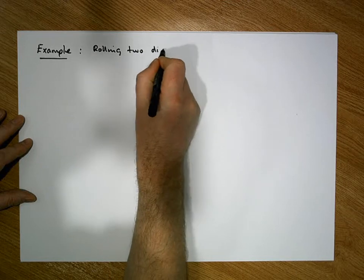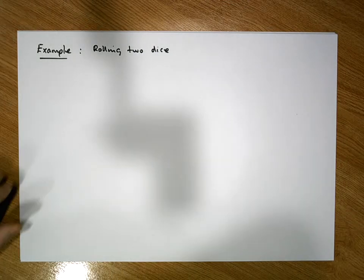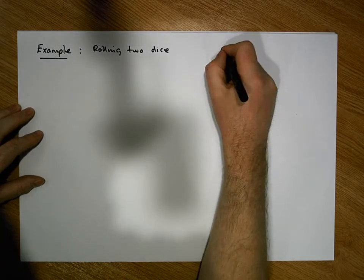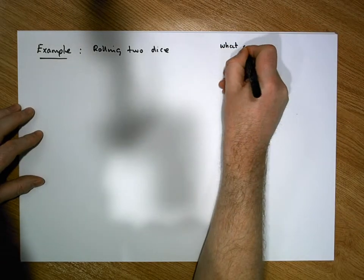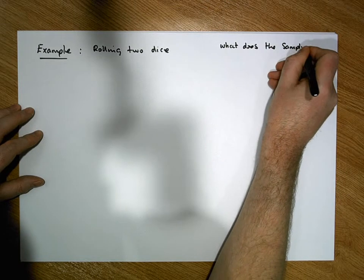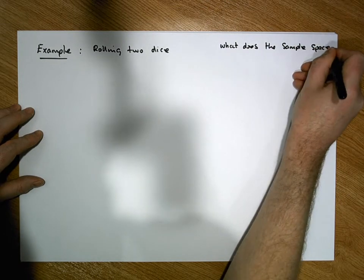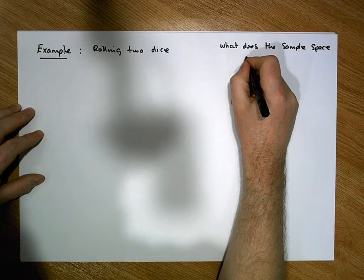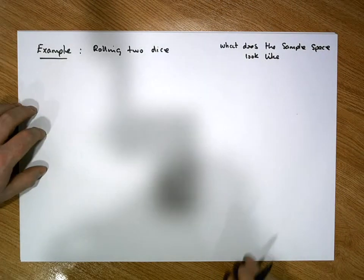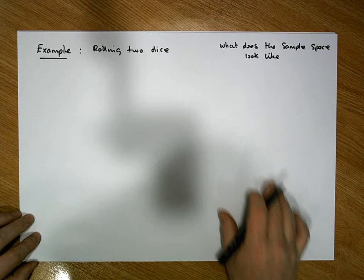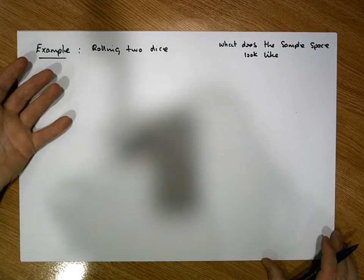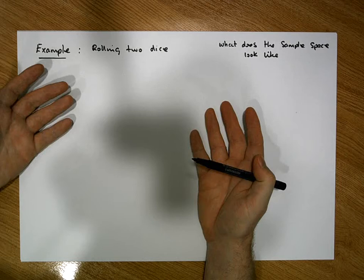We're going to roll two dice. The question we should ask ourselves at this stage is: what does the sample space for a two-die experiment look like? It's all possible outcomes — all the possible values we could get for the first die associated with all the possible values we could get with the second die.